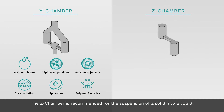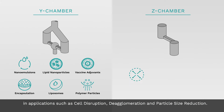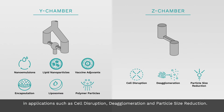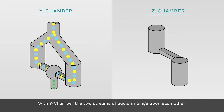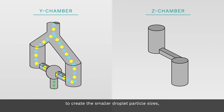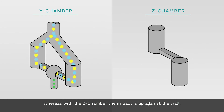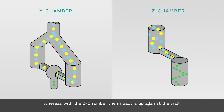The Z chamber is recommended for suspension of a solid into a liquid in applications such as cell disruption, deagglomeration, and particle size reduction. With the Y chamber, the two streams of liquid impinge upon each other to create the smaller droplet particle sizes, whereas with the Z chamber, the impact is up against the wall.